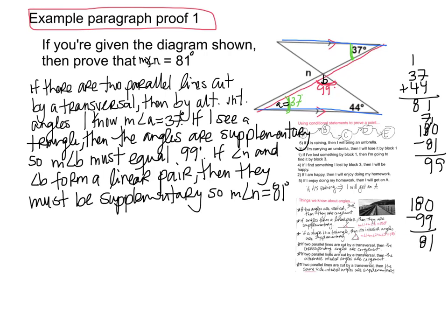That's my paragraph proof. I took my existing knowledge about angles and organized it in a logical way to prove that the measure of angle N is 81. If you and your neighbor both did this proof as a paragraph proof, you'd probably use similar thinking, but your paragraph proof would look different — because the words that come to mind are different. Your friend might say 'add up to 180' instead of 'supplementary,' and that doesn't mean they're right or wrong; they're saying the same thing in different words.